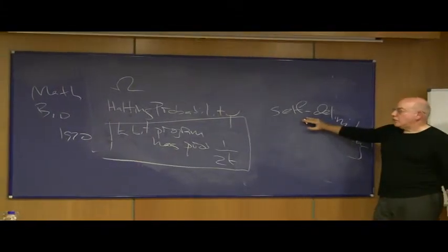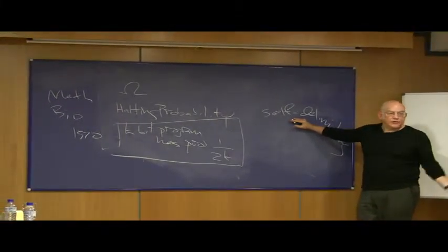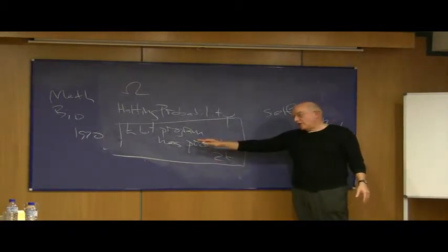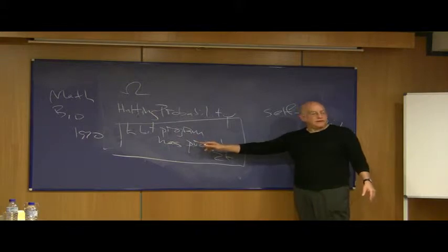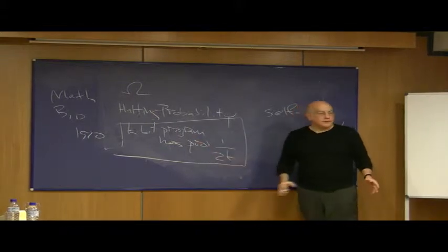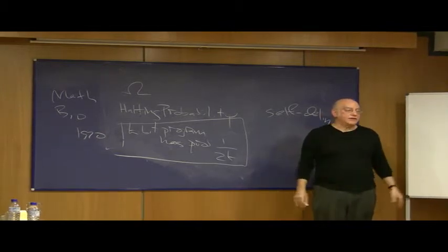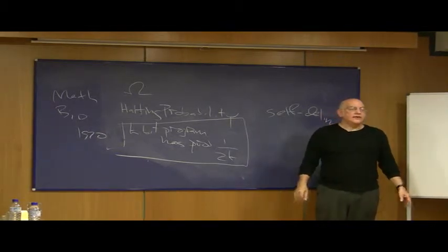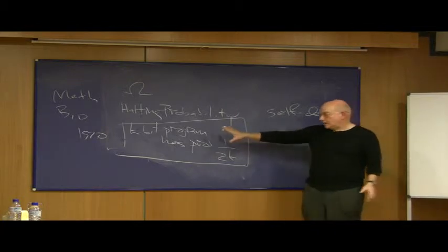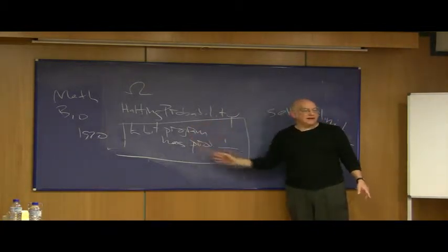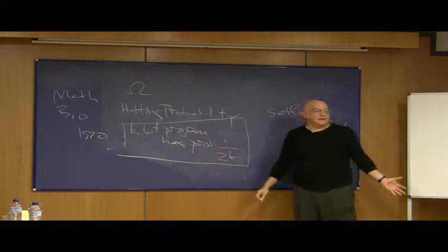So this has the property that no extension of a valid program is a valid program. And therefore it implies that if you generate each bit of a program by an independent toss of a fair coin, the total probability over all possible programs of any size will be less than or equal to one. If you do things the wrong way, the total probability defined like this over all possible programs will give you infinity. And that's not valid.